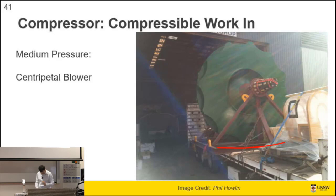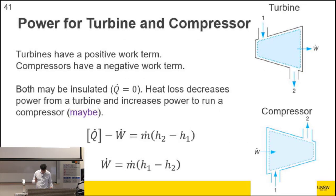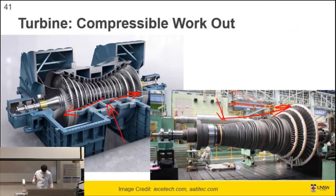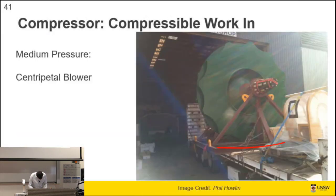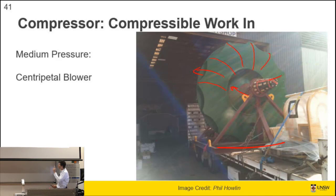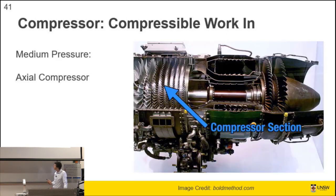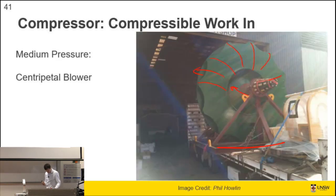This impeller — for a different fan — is about the size of a flatbed truck, around 13 tonnes and worth about $300,000. The vanes are visible; you can see the inlet and outlet. I'll show the housing it sits in later. Centripetal blowers are appropriate for medium pressures and large volumetric flow rates — this particular fan maintains about 13 kPa pressure difference.